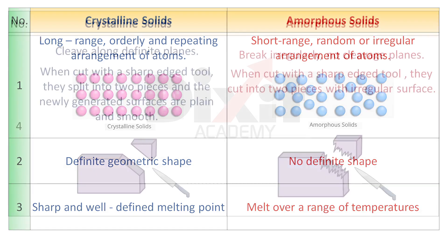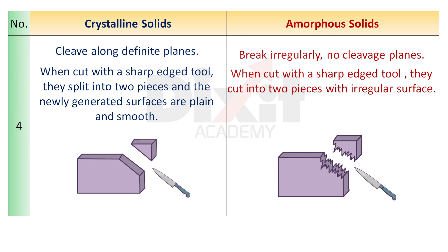Point number 4. Crystalline solids cleave along definite planes. When cut with a sharp edged tool, they split into two pieces and the newly generated surfaces are plain and smooth. Amorphous solids break irregularly with no cleavage planes. When cut with a sharp edged tool, they cut into two pieces with irregular surfaces.